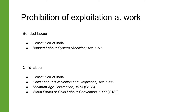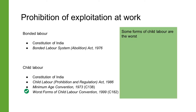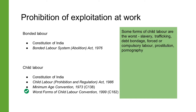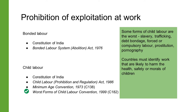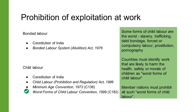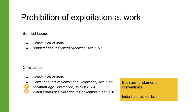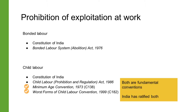The Worst Forms of Child Labor Convention 1999, which is ILO Convention number 182, identifies some forms of child labor as the worst, including all forms of slavery such as trafficking and debt bondage, forced or compulsory labor, and prostitution and pornography. It also requires countries to identify work likely to harm the health, safety or morals of children as the worst forms of child labor. The convention obliges member nations to prohibit all such worst forms. Both of these are fundamental conventions and India has ratified them.